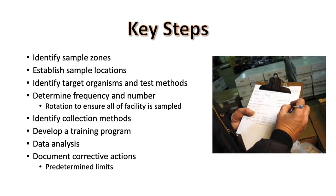The key steps in preparing your pathogen environmental monitoring program include the following. Identify sample zones. Establish specific sample locations within each of the zones, and identify the target organisms and test methods for each of the sample locations. Determine the frequency and number of samples, making sure that all areas of the facility, even those that are challenging to access, are included.